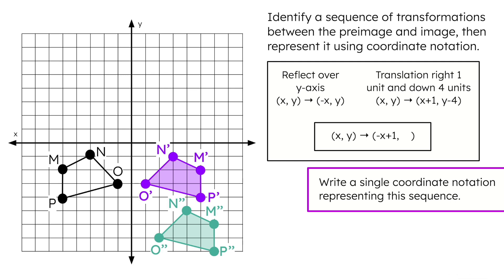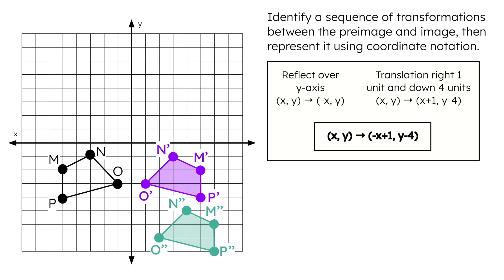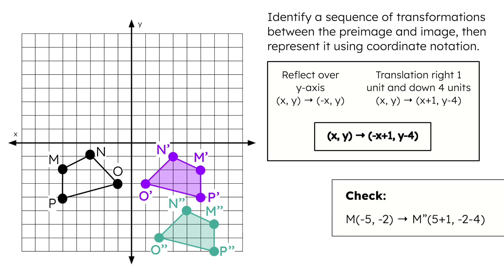The x-coordinate after the reflection is −x, and the translation increases the new x-coordinate by 1. The y-coordinate doesn't change after the reflection, and the translation decreases it by 4. That's the coordinate notation representing this sequence. Let's check whether it's correct by applying it to point M at (−5, −2). We change the sign of −5 to 5 and add 1, then subtract 4 from −2. That gives us (6, −6), which matches M''.